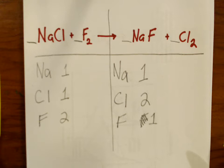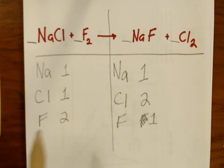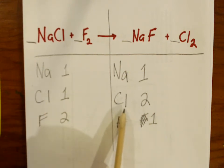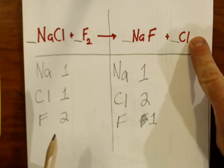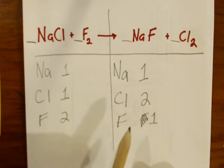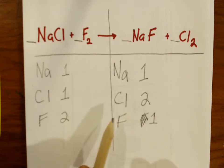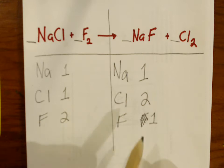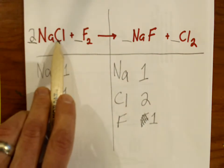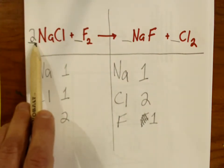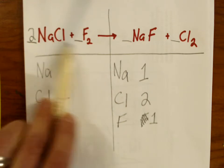Where do we begin? We've got two elements that are out of balance. It kind of doesn't matter, so I'm going to pick chlorine. There's one chlorine on the left side and two chlorines on the right side. You might be tempted to cross out that two after the Cl — not allowed. That two remains. What we have to do is put a coefficient somewhere that'll make the number of chlorines balanced, so I'll put a two in front of the compound that contains the chlorine. That two doubles the amount of chlorine on this side.